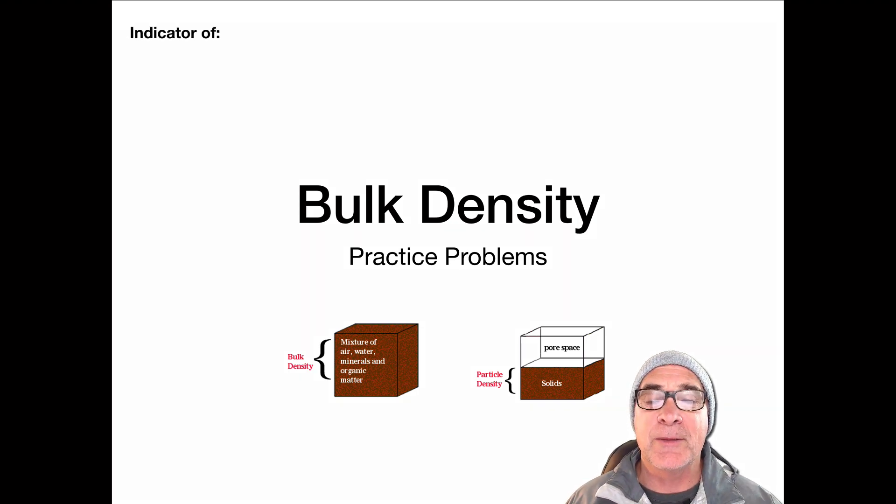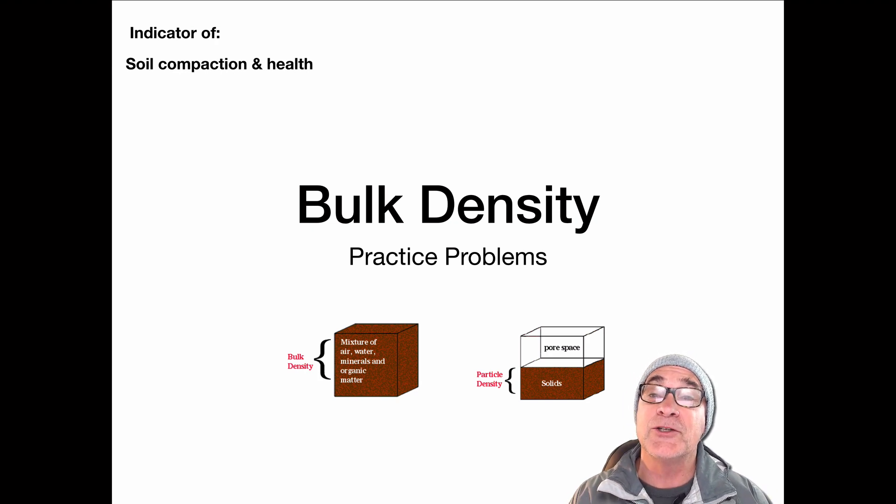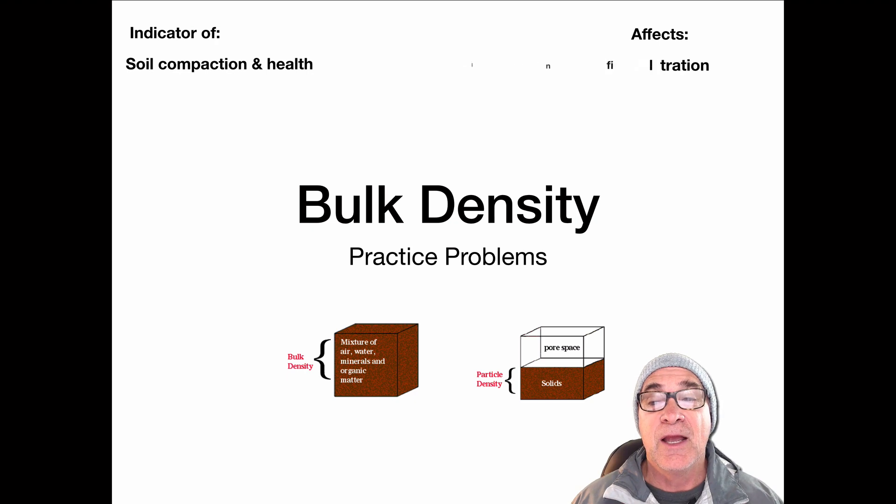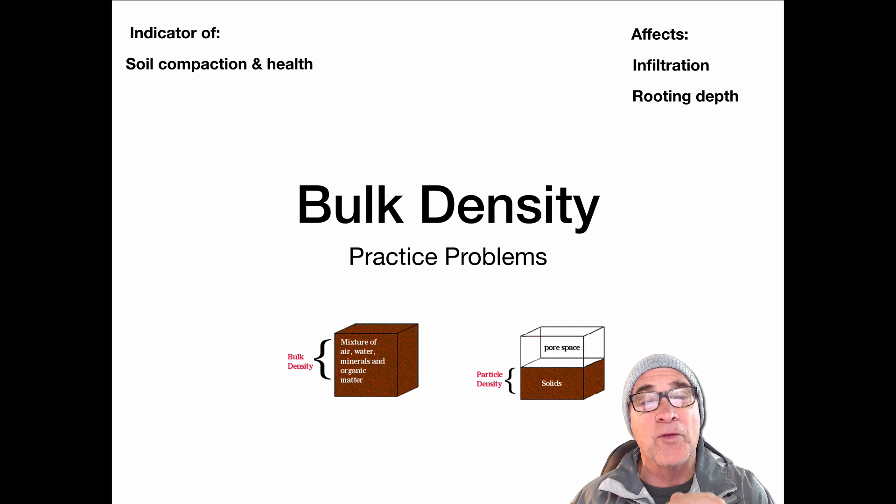One of the things that bulk density definitely is an indicator of is soil health and soil compaction. We're going to be taking a look at the relationship between bulk density and porosity. Some things that bulk density affects: it affects infiltration, how water percolates through the soil. It also dictates how far the roots can actually stretch out and get down into the soil to get water and nutrients.